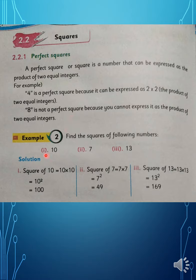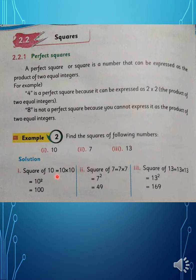Now find the square of the following numbers. When you find a square, you multiply the same number by itself. Square of 10: 10 × 10 = 100. Square of 7: 7 × 7 = 49. Square of 13: 13 × 13 = 169. These are the squares of the given numbers.